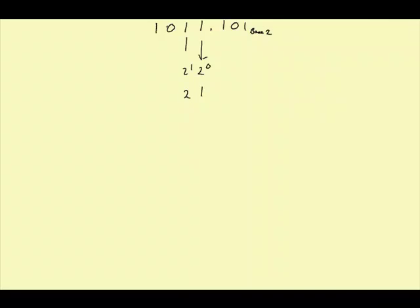And I have 0, 2 squares, which is, of course, 0. And I have 1, 2 to the 4th, I mean 2 cubed actually, which actually is 8.